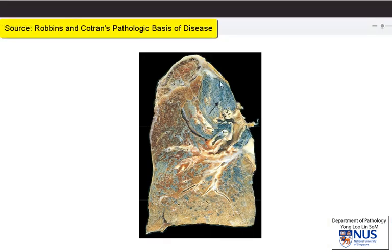Here is an example of very severe parenchymal fibrosis, and this picture is taken from Robbins and Cotran's Pathologic Basis of Disease. You can see that this is the right lung, and the entire upper lobe is severely scarred and contracted, with this whitish appearance. This is due to a very severe fibrosis.